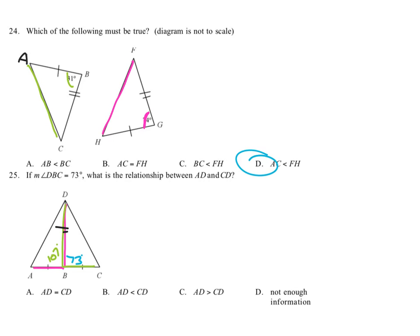And whatever is across from the bigger angle will be the bigger side. So since this is across from 73 and that's less than 107, we know that side DC is going to be smaller than AD. Or another way of saying it is that AD is greater than CD.